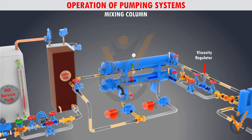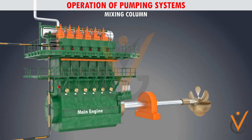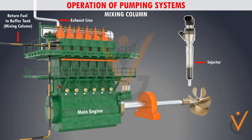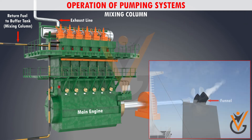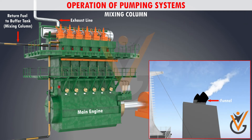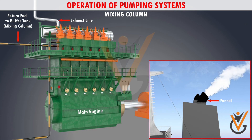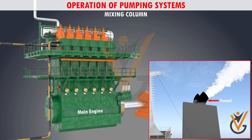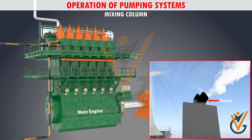The fuel pumps deliver high-pressure fuel to the injectors. A pressure regulating valve ensures the engine-driven fuel pumps have a constant supply of pressure. A pre-warming bypass is used to warm up the fuel before starting the engine, ensuring there is no vapor lock in the supply system.